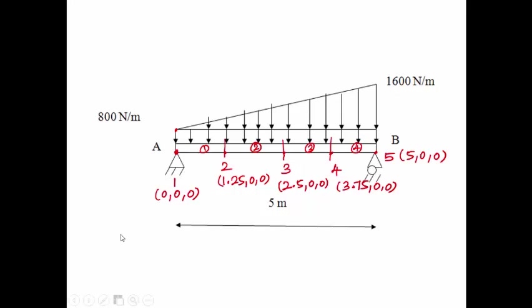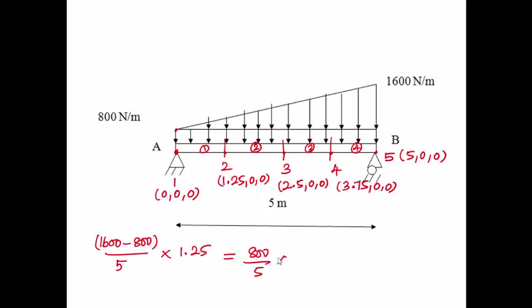Totally we have considered 4 elements to model the entire beam structure. For the whole 5 meter length, the variation of the load is 1600 minus 800, from 800 N/m at point A to 1600 N/m at point B, so total variation is 800 N/m. For the first element of 1.25 meter, the variation is 200 N/m. So at nodal point 2, the load is 800 plus 200 = 1000 N per meter.